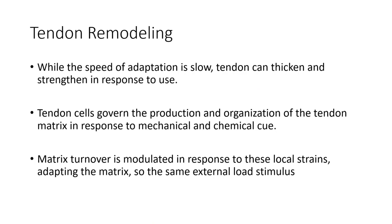Because tendons are hypovascular, their adaptation is slow — but it does happen. Tendons can thicken and strengthen in response to use. Tendon cells govern the production and organization of the tendon matrix in response to mechanical and chemical cues. Matrix turnover is modulated by response to local strains, which adapt the matrix so it can tolerate load — adapting the tendon over time to mechanical stimuli.